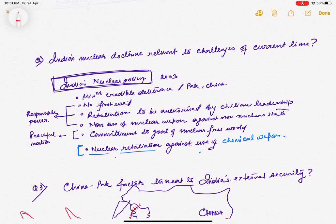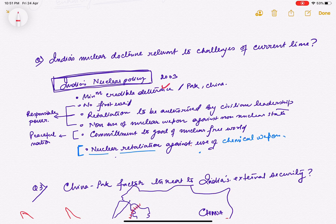Next question: India's nuclear doctrine is relevant to the challenges of the current time. What is India's nuclear doctrine? First, minimal credible deterrence. Why do we need minimal credible deterrence? We are holding a minimum number of nuclear warheads to deter China and Pakistan from using theirs. If you use, we will use—to prevent other nuclear power countries from using their weapons. Second, no first use. Third, retaliation would be done by civilian leadership. Last, no use of nuclear weapons against non-nuclear states. This establishes that India is a responsible power.